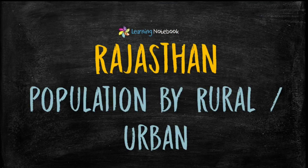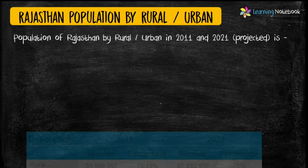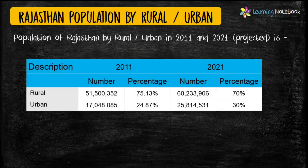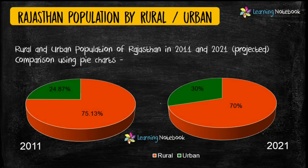Next idea is to include population of Rajasthan by rural and urban division for your maths-art integrated project. See here how we have used two pie charts to compare rural and urban population of Rajasthan for two years.